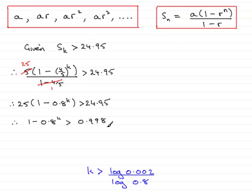Next I'm going to rearrange this inequality. I'm going to add 0.8 to the power k to both sides and at the same time subtract 0.998 from both sides. So that's going to give me 0.002 is greater than 0.8 to the power k. Next I'm going to turn the inequality around because I prefer to have the term with k on the left hand side. So reversing it around I can say 0.8 to the power k is less than 0.002.